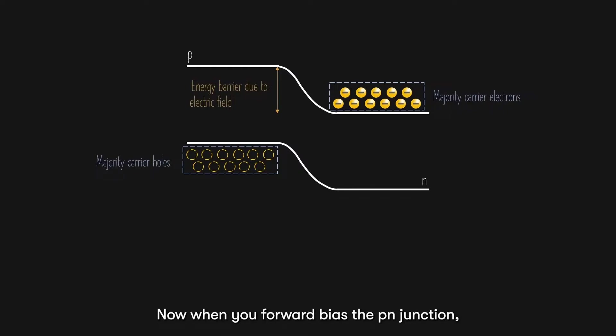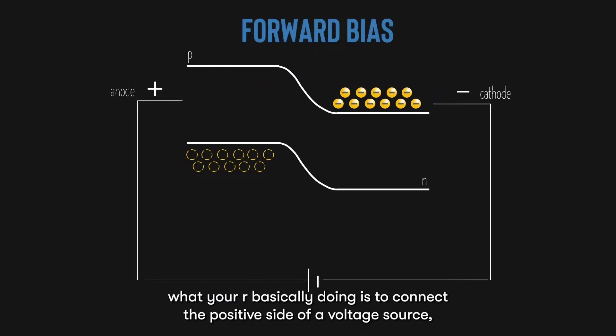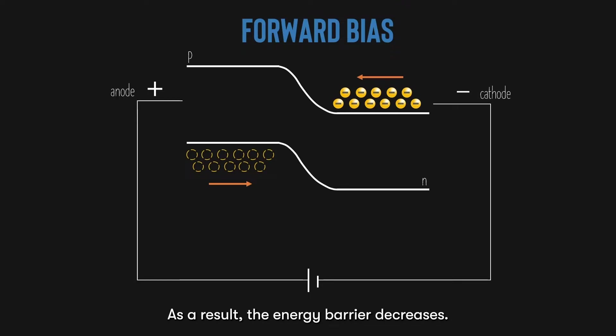Now, when you forward bias a PN junction, what you are basically doing is that you are connecting the positive side of a voltage source, like a battery to the P side, and the negative side to the N side. The positive side repels the holes at the P side, providing an extra force to diffuse the holes to the N side. The negative side repels the electrons at the N side, providing an extra force to diffuse the electrons to the P side. As a result, the energy barrier decreases.